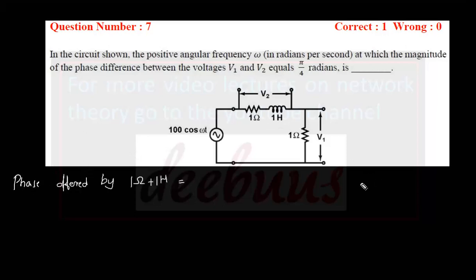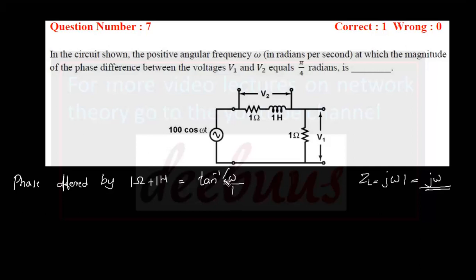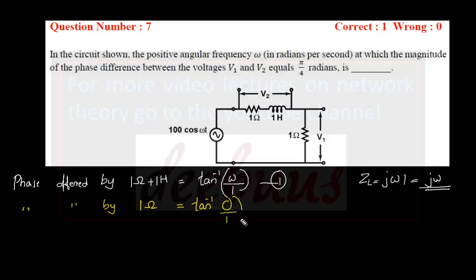Checking the first arm — 1 ohm plus 1 henry — we calculate the impedance of the inductor: Z_L = jωL, and since L=1, that is jω. The phase offered by the 1 ohm + 1 henry arm is tan⁻¹(ω/1), marking it as expression 1. Similarly, the phase offered by the 1 ohm arm is tan⁻¹(0/1) = 0 degrees, marking it as expression 2.